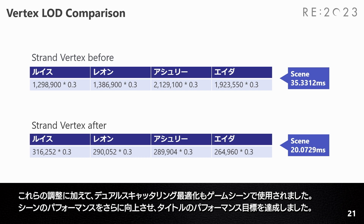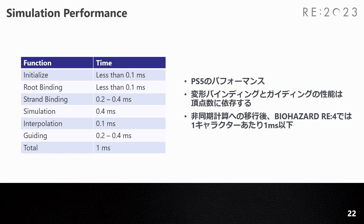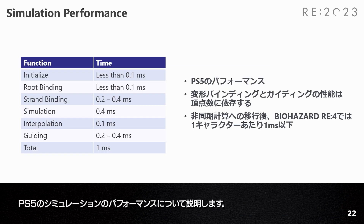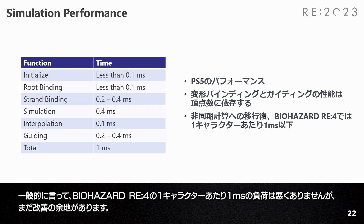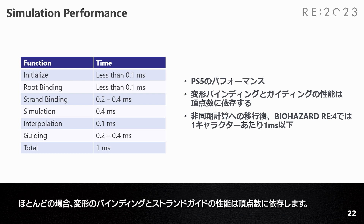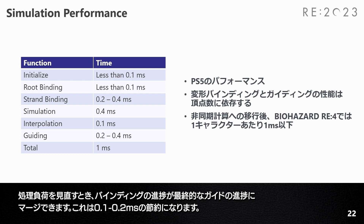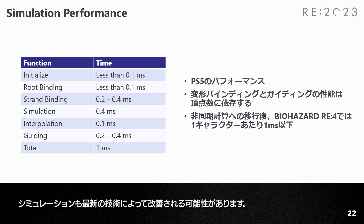In addition to these adjustments, dual-scattering optimization was also used in the game scene to further improve performance and achieve the title's performance objectives. Generally speaking, 1ms per character in Resident Evil 4 is not bad, but still could improve. It depends on the vertex count in most cases. Half of the time is used for strand position binding and strand guiding interpolation. When reviewing, the binding progress might merge with the final guiding progress, which could save 0.1 to 0.2ms. Simulation may also be improved through the latest technologies.